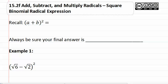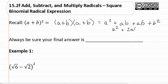Recall when we had a binomial that was squared, this meant that you could rewrite it as the binomial times itself. And that when you multiplied this, you used FOIL giving you a squared plus a b plus a b plus b squared which resulted in a squared plus 2 a b plus b squared.